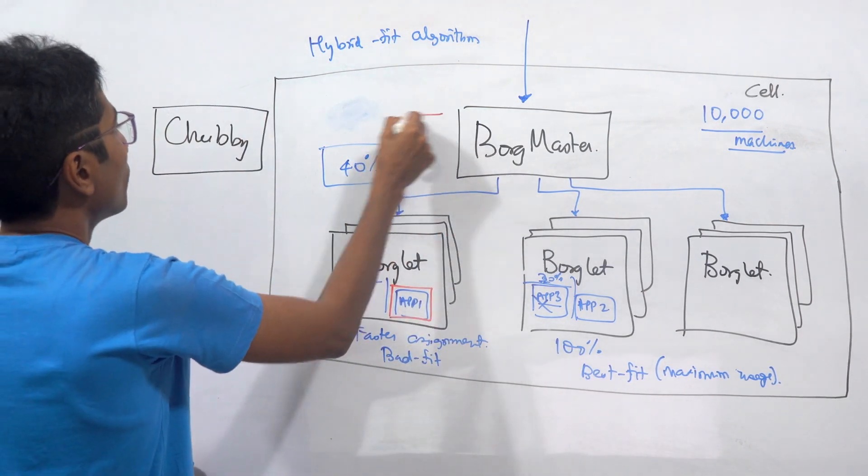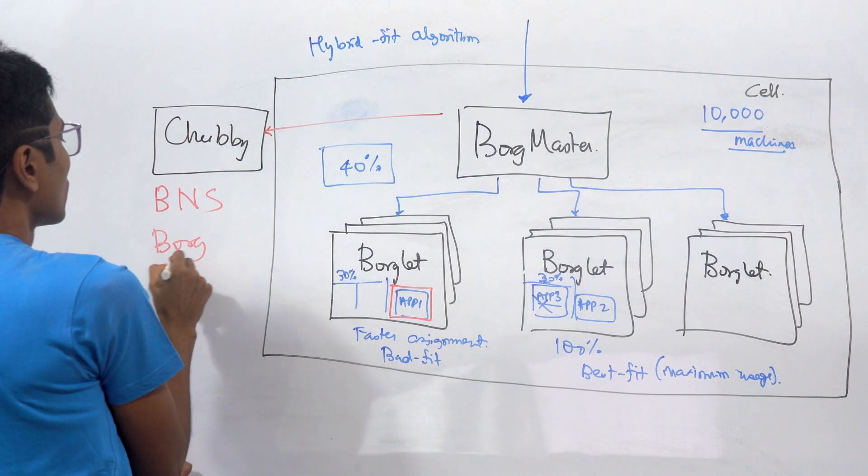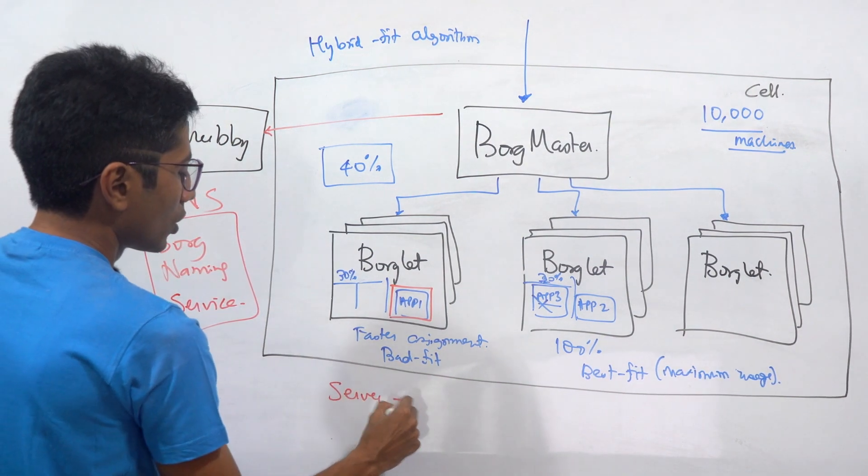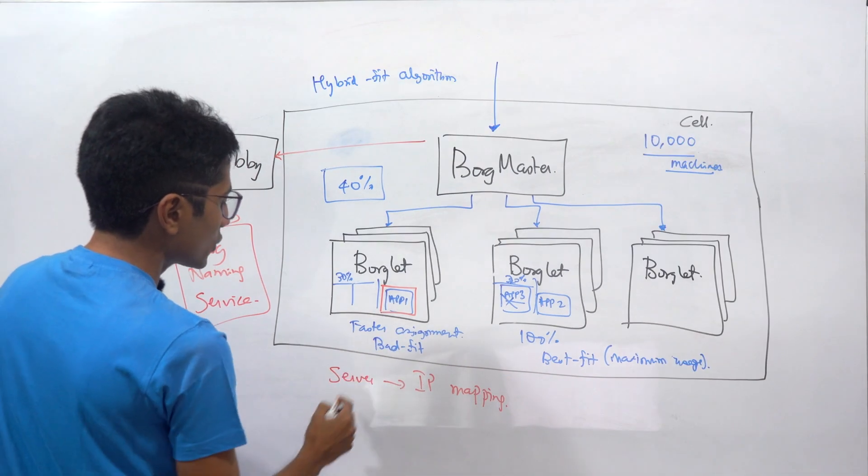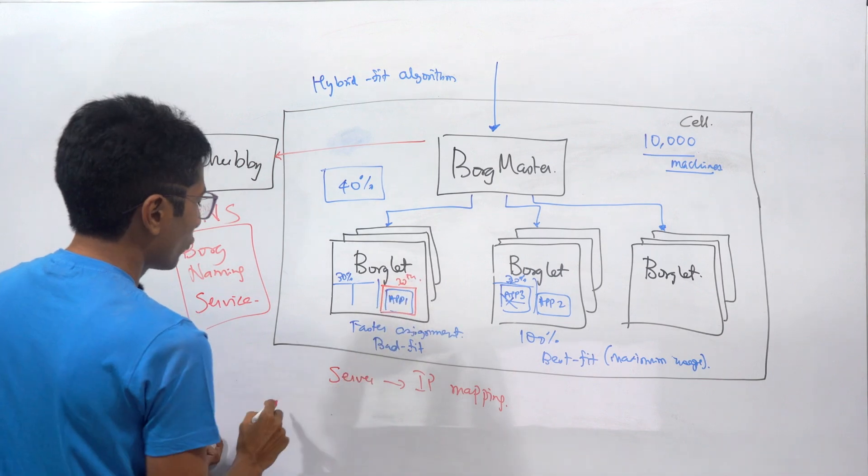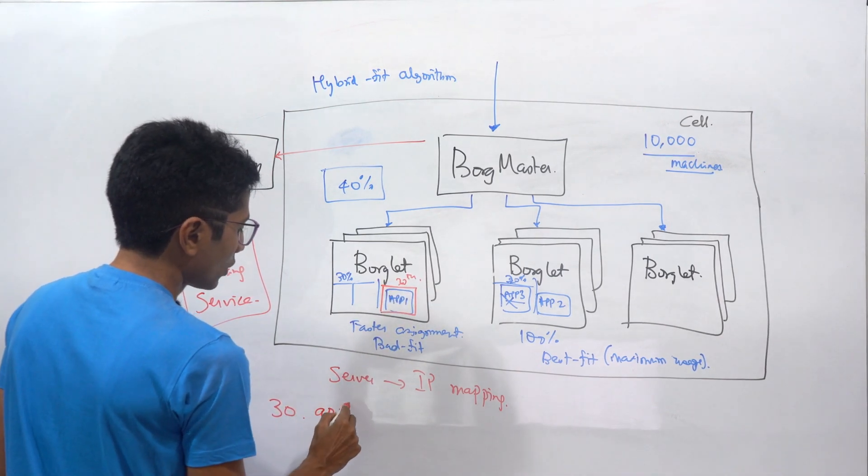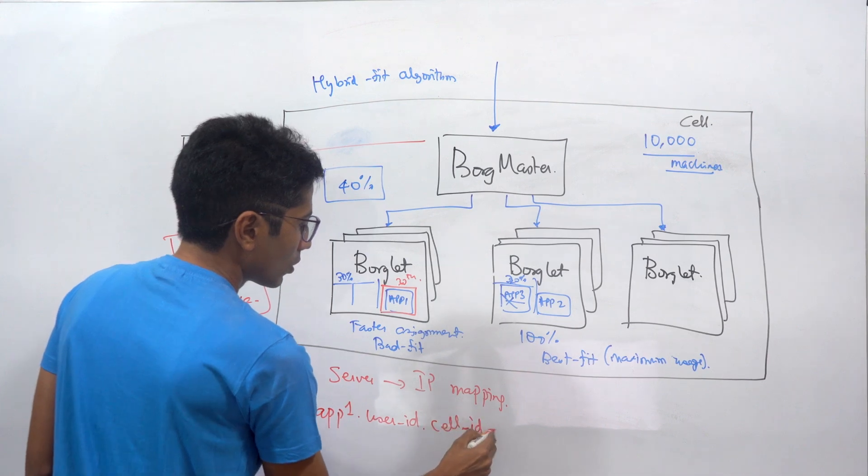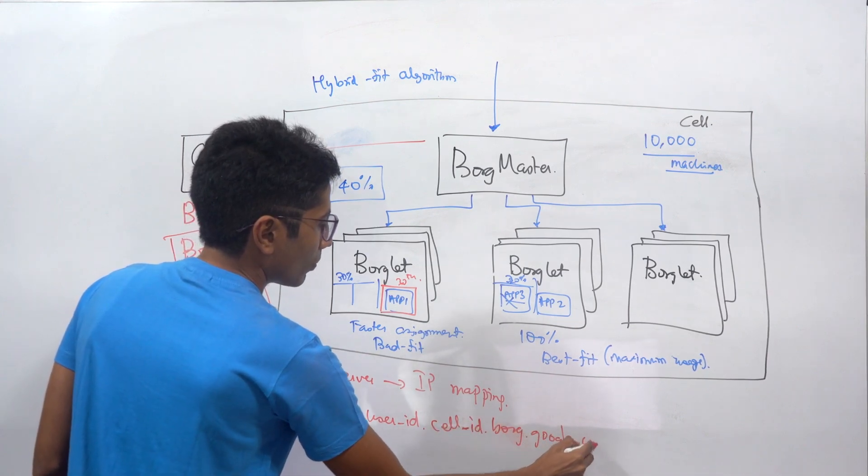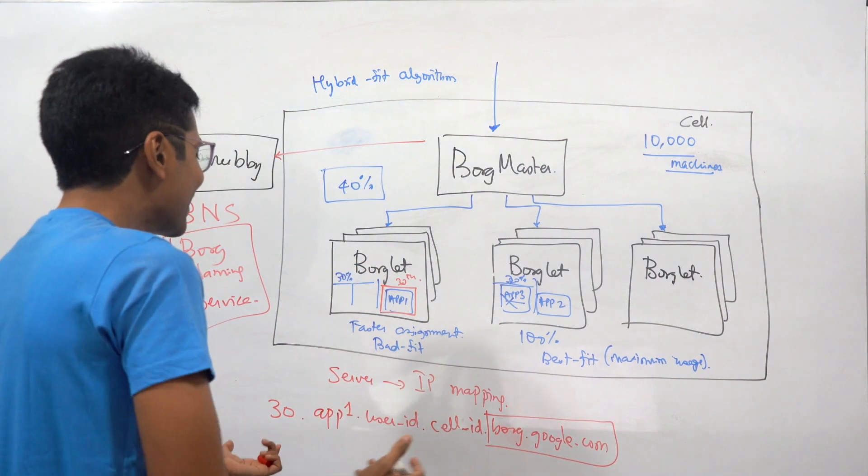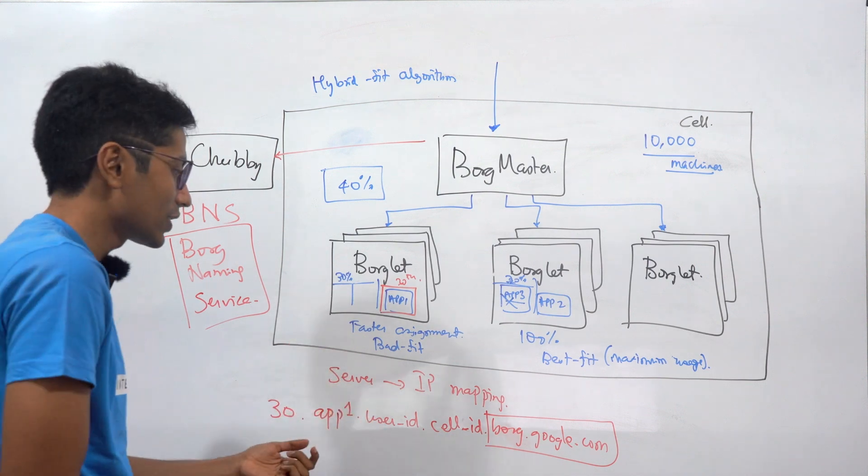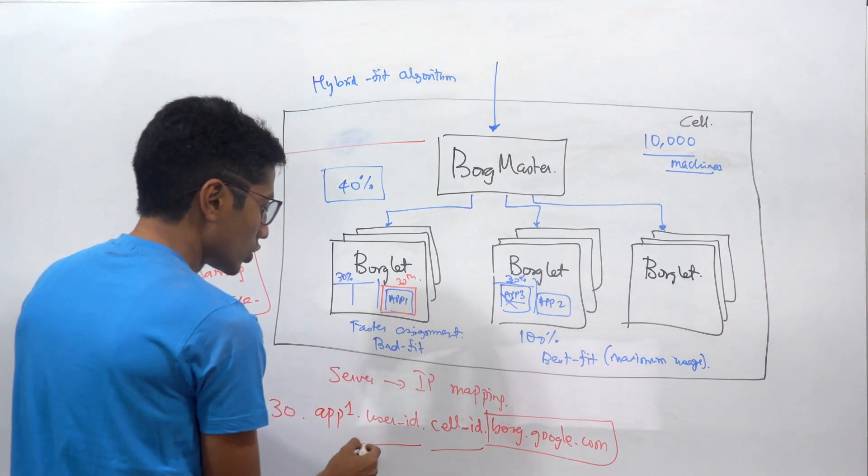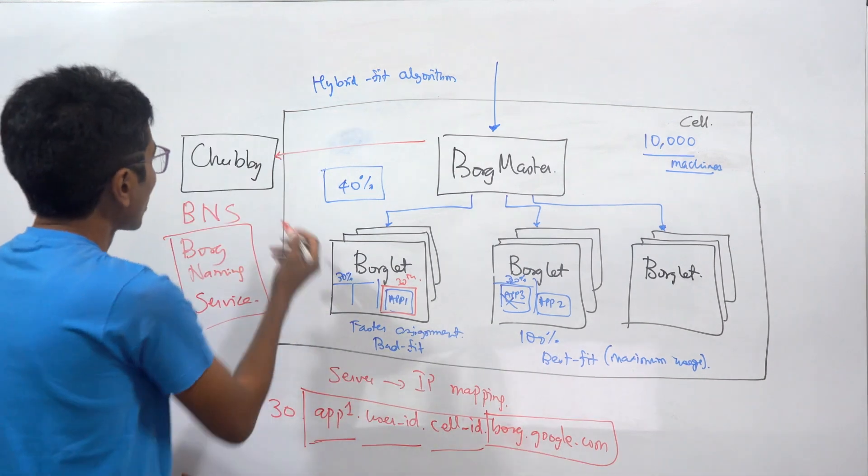Once an application is assigned to a Borglet, once it is running here, there is a mapping added in a service called BNS. It stands for Borg Naming Service, very similar to a domain name server. This keeps a server to IP mapping. So in this case, you're going to have something like, let's say this is the 30th server of app1, so that's going to be 30.app1.the user who has executed this command on Borgmaster, the cellid.borg.google.com. I don't know why they have this part, I think it just sounds cool or something. But in this way you can have some sort of a regex which says borg.google.com is at the end for this cellid. So you're doing an inverse or the reverse regex: this cellid, this user who has started the task, for this application get me all the servers. And then Chubby can store these in a file.